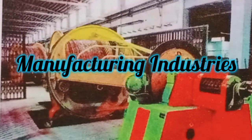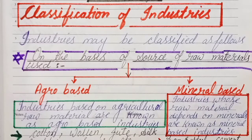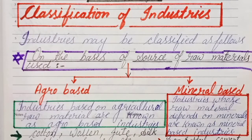Hello everyone, welcome to Multi-Education Corner. In this video we will continue our topic manufacturing industries. Today we will discuss the classification of industries. We will classify on the basis of: source of raw materials, main role, capital investment, ownership, and bulk and weight.